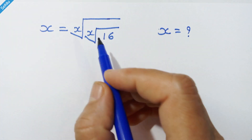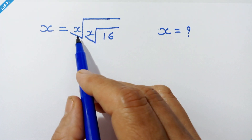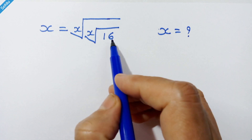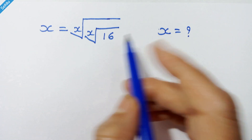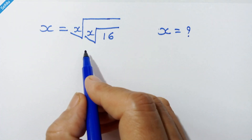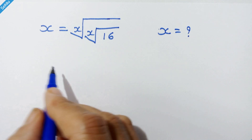Hello friends, we have x is equal to x root of x root of 16. Let's solve for x. First, let's simplify the right hand side.